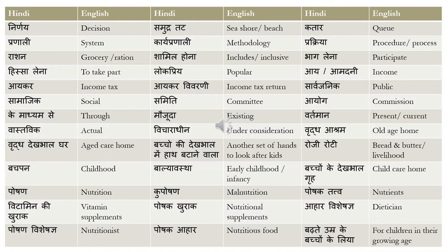'Vridhashram' means old age home. 'Vridh dekbhal ghar' — 'vridh' is aged, 'dekbhal' is care, and 'ghar' is home — you can also say 'greh'. In a dialogue, a sentence like 'it would be easier if there was another set of hands to look after the family' can be translated as: 'bachon ke dekbhal mein haath batane wala mil jaye toh sahuliyat hoti hai' or 'suvidha ho jaaye'.